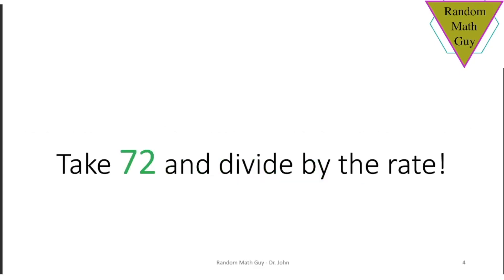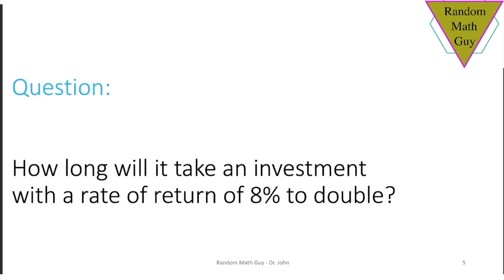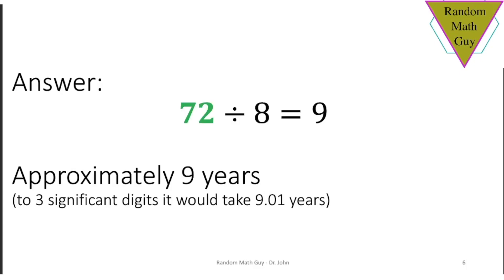Let's try a few examples. How long will it take an investment to double if the rate of return is 8%? Okay, take 72 and divide by 8. You get 9 years to double your money. Look down here, you'll see that approximately to three significant digits the answer is actually closer to 9.01, but that's pretty damn close.